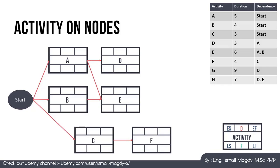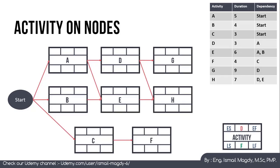Activity G depends on D, and activity H depends on both D and E. At the end we always have the project end point connected to the latest activities. Now that we have drawn all activities and their relations, we can start calculating the duration and the start and finish dates for each activity. We add the duration of all activities to their respective nodes.